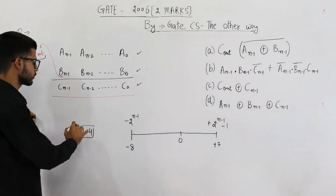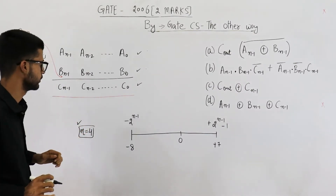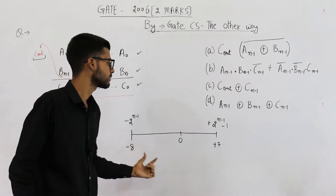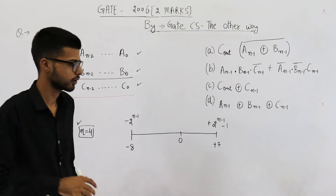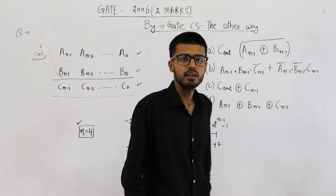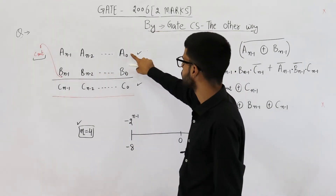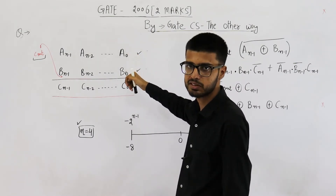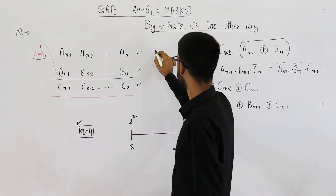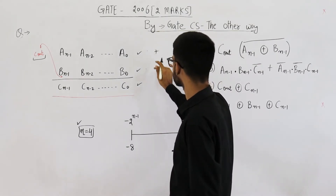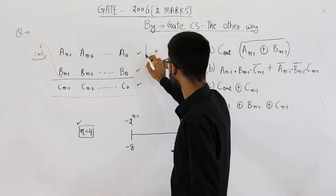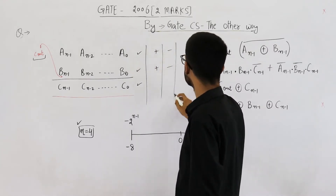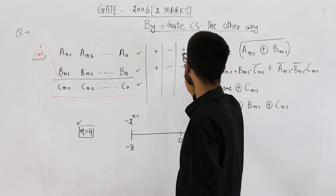Suppose n is equal to 4, that means we are talking about 4-bit numbers only. In this case, the range will be from minus 8 to plus 7. Now, what are the possibilities for these two numbers? If these two numbers are signed numbers, they can both be positive, both be negative, or one can be positive and one can be negative.